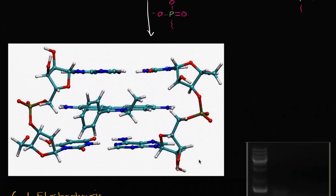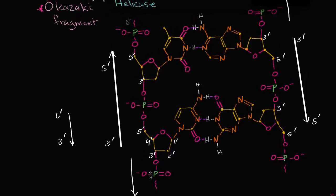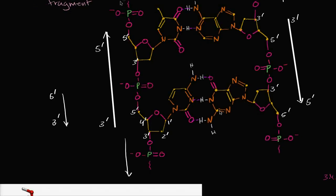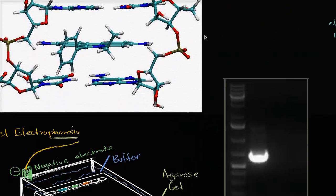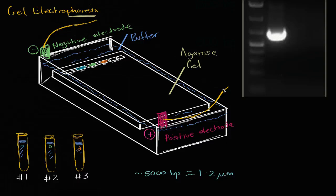And we could go back into previous videos and see it right over here. You see these negative charges on our phosphate backbone. And so what is going to happen once we connect both of these to a power source, and this side is negative and this side is positive? Well, the DNA is going to want to migrate.